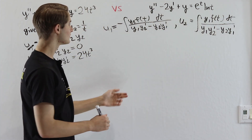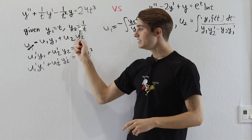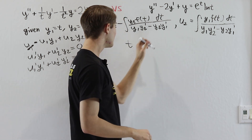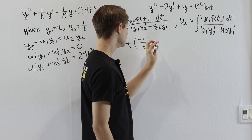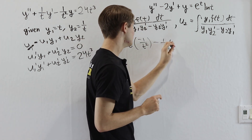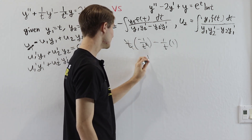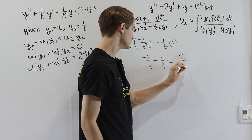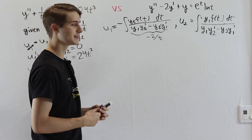Before computing the integrals, let's find the denominator. With y1 = t and y2 = 1/t, y2' = −1/t². So y1·y2' = t·(−1/t²) = −1/t, and y2·y1' = (1/t)·1 = 1/t. Subtracting gives −1/t − 1/t = −2/t. That denominator of −2/t applies to both integrals.